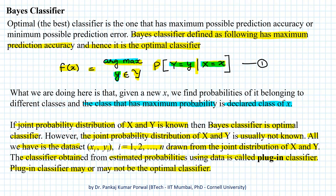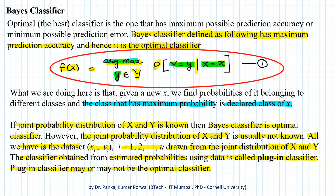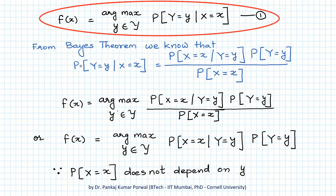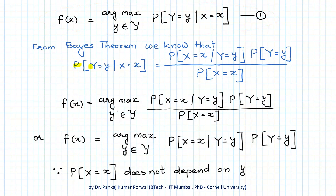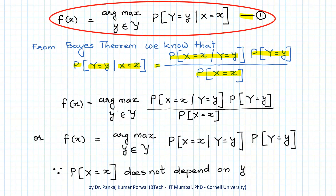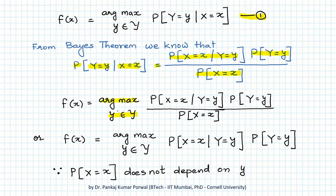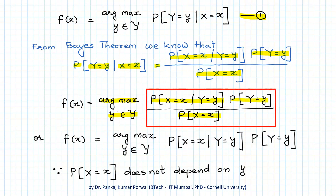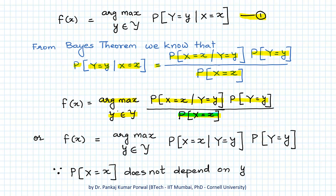So how do we do the actual predictions? We rewrite our classifier using Bayes' theorem. We know that the conditional probability of Y given X can be written as the conditional probability of X given Y times P(Y), divided by P(X). So equation 1 becomes argmax over y of P(X=x | Y=y) times P(Y=y) divided by P(X=x). Note that P(X=x) does not depend on y.